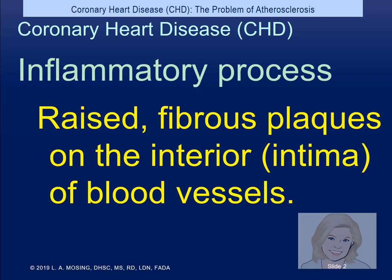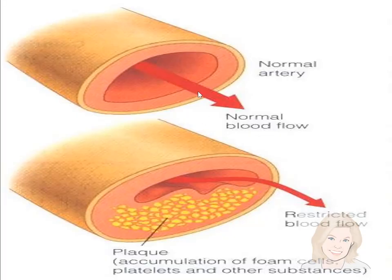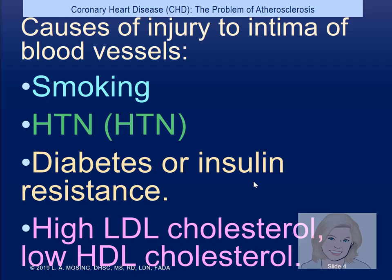When we're looking at plaque, it's raised fibrous plaque on the intima — the inside of the blood vessels. We're born with nice, clean arteries, and then they adopt the American diet. So what happens to your blood flow? It begins to be restricted. Does it raise or lower your blood pressure? Yes, it raises it. So what are some other things that people could do that would injure their arteries?